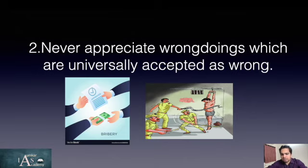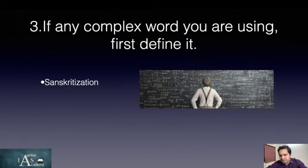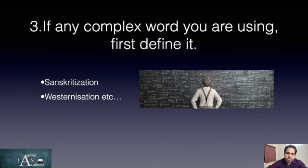Another example is custodial torture. Suppose there is a case where a person is suspected to be a terrorist — you cannot propose in your essay that we should torture him to extract the truth, because after all he is only under suspicion and he has his own human rights. If you use any complex word, you should first define it, because you may know it but the examiner may not. For instance, if you belong to a sociology background and want to use words like Sanskritization or Westernization, first define those words, then explain their importance.